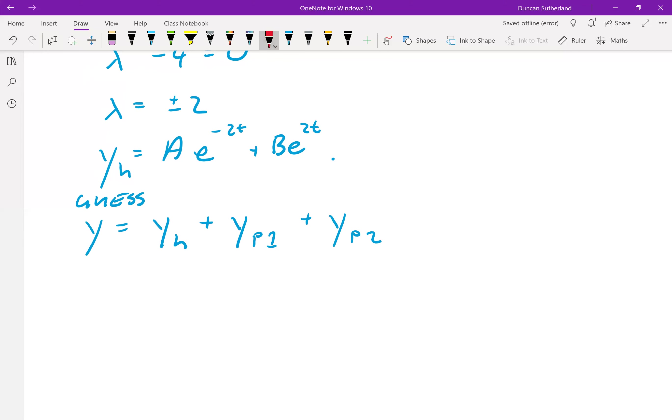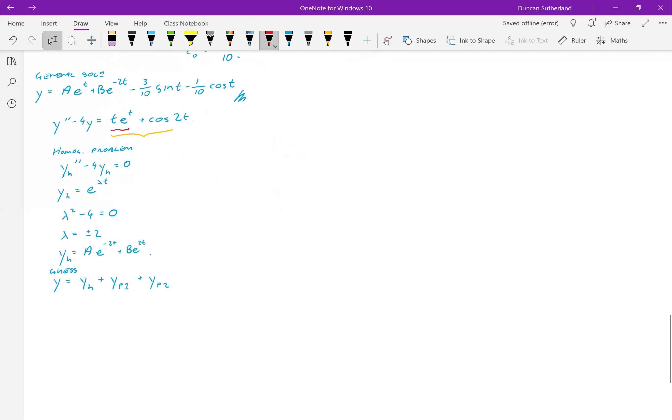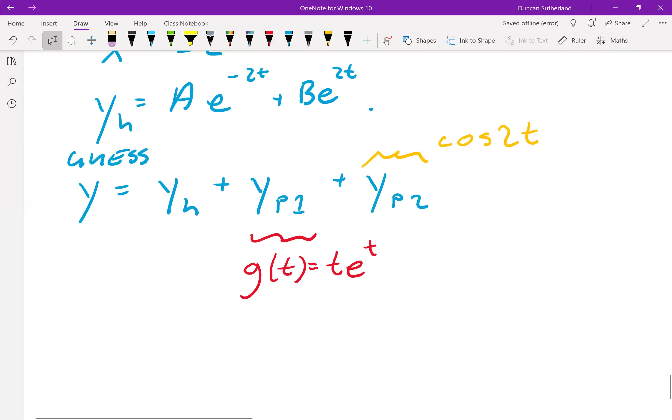So this y particular 1 deals with the e to the t, the exponential one. And y particular 2 deals with the cosine. So we're going to get two separate problems now when we substitute in.